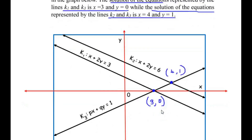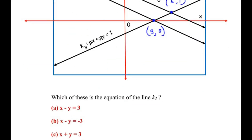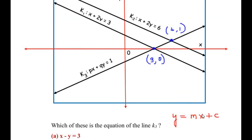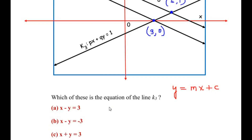Remember that any straight line is given by the standard equation y = mx + c, where m represents the slope of the line and c represents the y-intercept — that is, the point where the line cuts the y-axis. Let us begin by finding the slope of line k3. Slope is given by the formula m = (y2 - y1) / (x2 - x1).